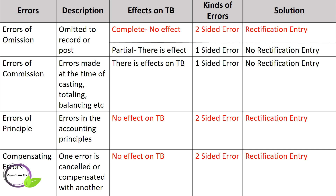It is a two-sided error, so complete rectification entry is required. Next example: cash paid to RAM is entered in cash account but omitted to post to RAM's account. It is partial omission and will show disagreement when preparing the trial balance. It is a one-sided error and will affect only one account, so it does not require a rectification entry. You are required to correct the wrong figures physically or by passing the opposite entry of the same account.